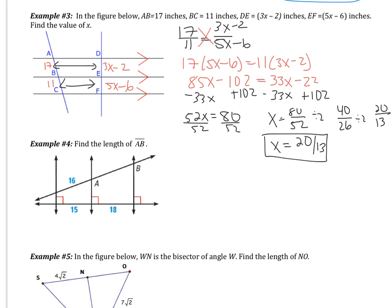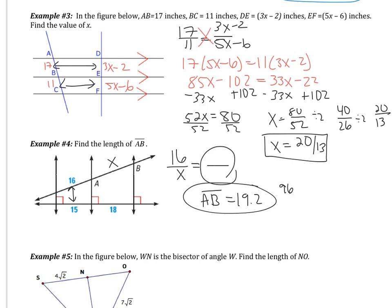Pause the video and try example 4 on your own — find the length of AB. You should have set up a proportion where the first transversal has sides of 16 and X, and 16 corresponds to 15 on the second transversal. If you did this correctly, you would have gotten AB to be 19.2, which as a fraction is 96 over 5. If you did not get it correct, pause the video right now and find your mistake.